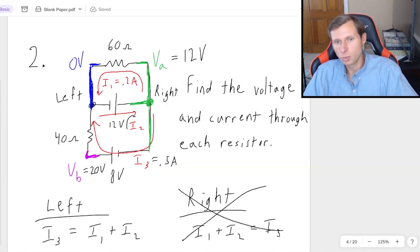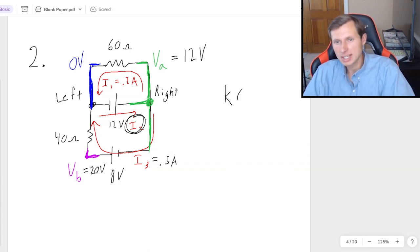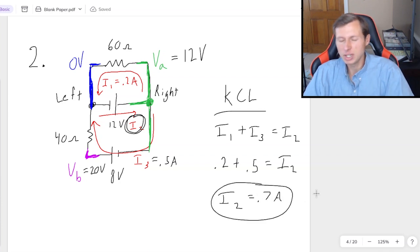And just in case you really wanted to solve for I2, I would have to redo my KCL equation because I changed the direction of I1, remember? So now I1 going in plus I3 also going in to that left node equals the I2 going out. So 0.2 plus 0.5 equals I2. Looks like I2 is going to be 0.7 amps. And we didn't need I2, but in case you wanted it, there you go.